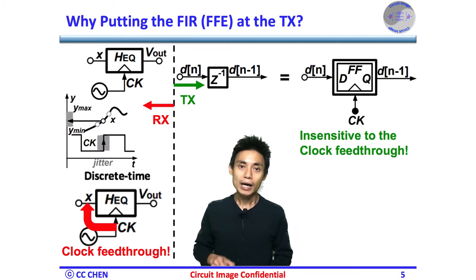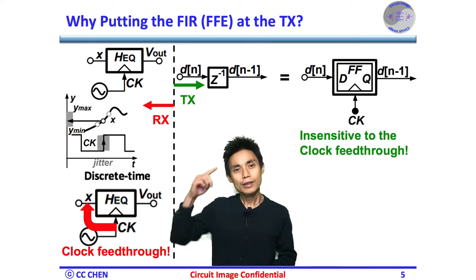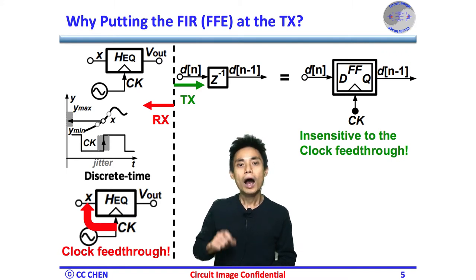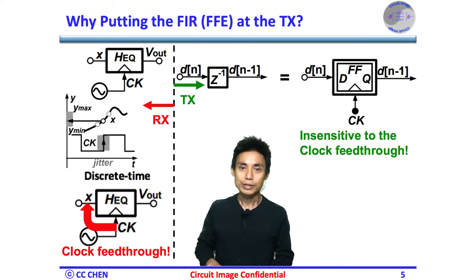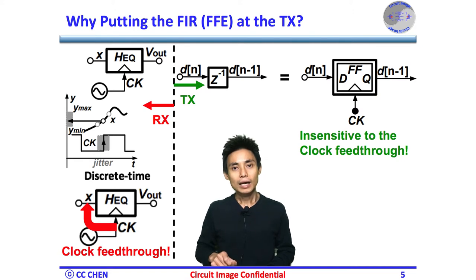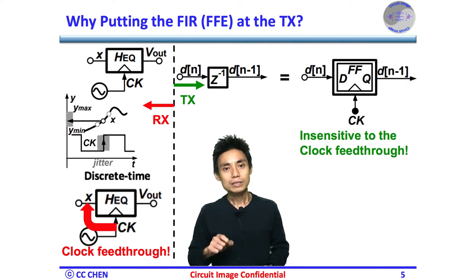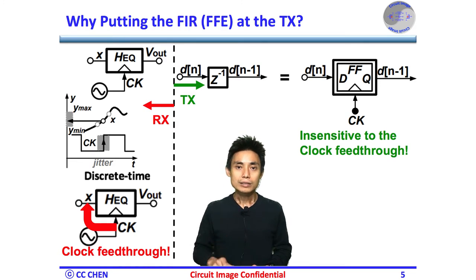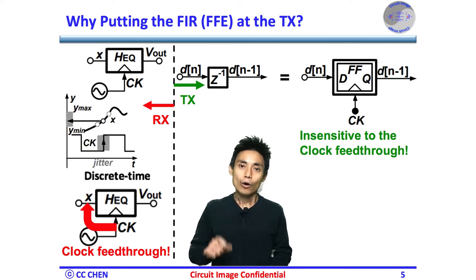After understanding the purpose of the FIR FFE as a discrete-time equalizer, why do we put the FFE at the TX instead of the RX? The RX discrete-time equalizer would suffer from analog sample accuracy and clock feedthrough at the RX front-end. However, on the TX side, the design challenge is much more relaxed. Since the TX input is already in the digital domain, digital delay is much easier than analog delay — a digital delay is just a flip-flop. Both data and clock are digital signals, so the noise margin is much less sensitive to clock feedthrough interference or any noise. Therefore, the discrete-time design overhead is smaller in the TX digital domain.